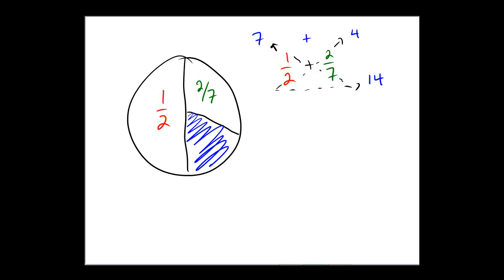7 plus 4, the numerator is 11. 7 times 2 is 14, and so 11/14 would be the region that is 1/2 plus 2/7.